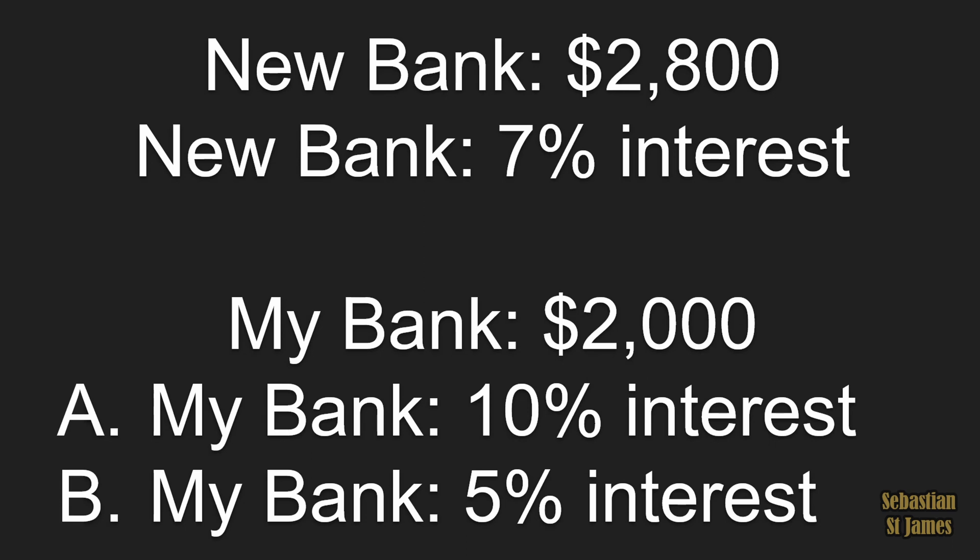Quite clearly, $2,800 is more than $2,000, so my bank must be paying me 5% — because I'm definitely switching to the new bank at 7%. If my math tells me my current bank is paying 10%, that's obviously wrong since it's giving me $2,000 rather than $2,800. So return on investment should always be calculated on today's value.